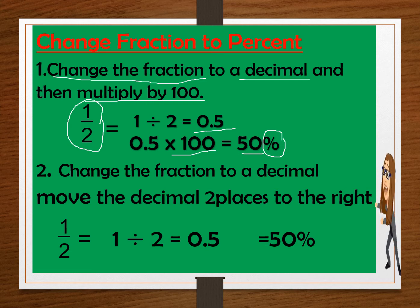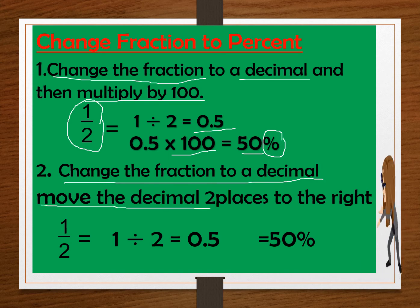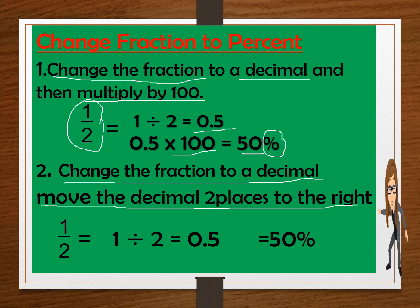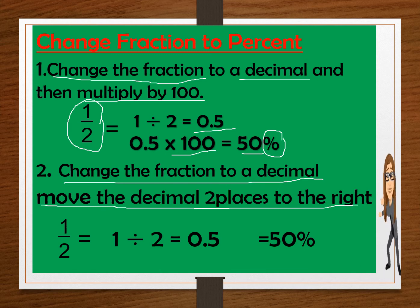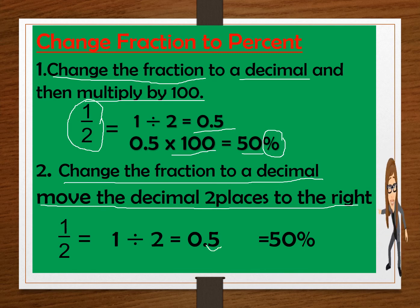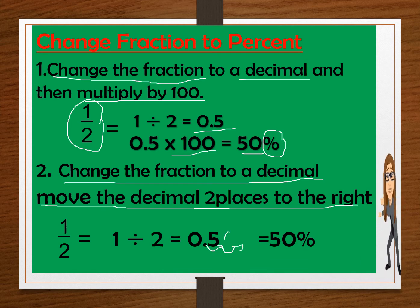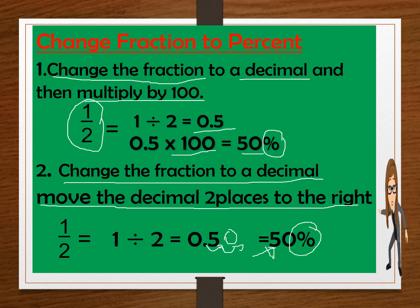Another method: change the fraction to decimal, then move the decimal two places to the right. So 1 divided by 2 is 0.5. We need to move the decimal two places to the right — 1 and 2 — putting a zero here. Don't forget to put the percent sign.